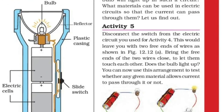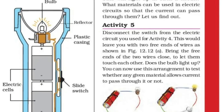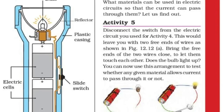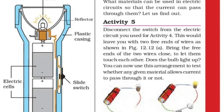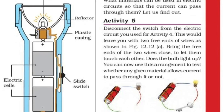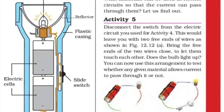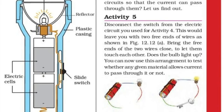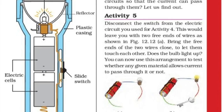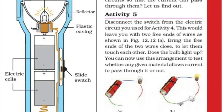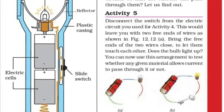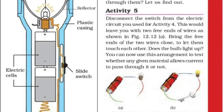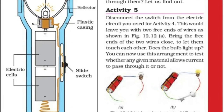We will disconnect the switch from an electric circuit and do an activity. We have two free ends of wires as shown in the figure. Bring the free ends of the two wires close and let them touch each other — the bulb will light up, showing that electricity passes through the connected wires.